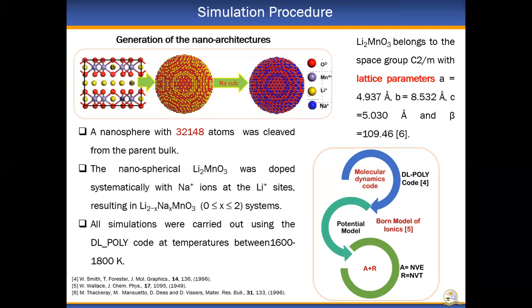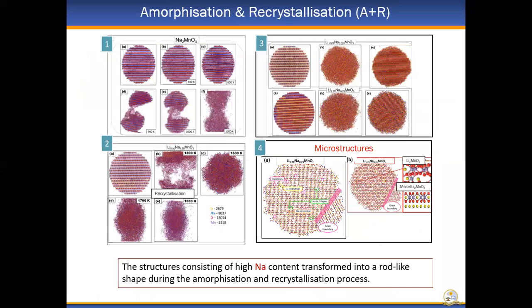The cleaved sphere was then substituted with sodium ions on the lithium sites. This was done in order to achieve systems of different sodium and lithium content. The molecular graphics for the sodium substituted systems are illustrated in the slide, where figure one represents a structure consisting of 100% sodium. The structure was introduced to various temperatures in order to identify the temperature at which a total loss of long-range interactions would be reached. We note the distortion of the structure as the temperature was raised.